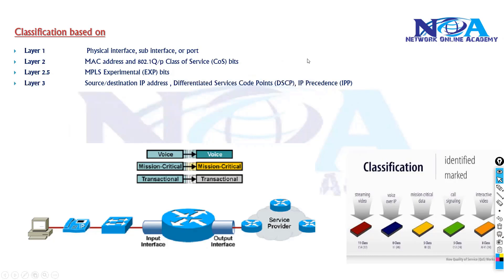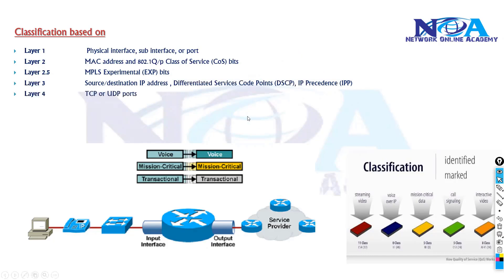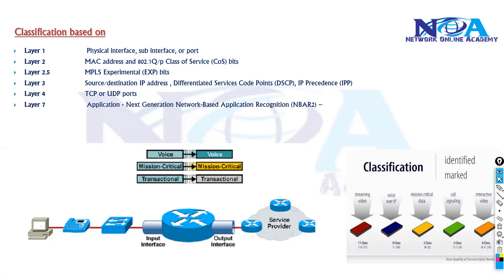IP Precedence and DSCP values differentiate traffic — values range from 0 to 7, where 7 is high priority and 0 is best effort. Similarly, we can match traffic based on TCP or UDP port numbers, just like ACLs.